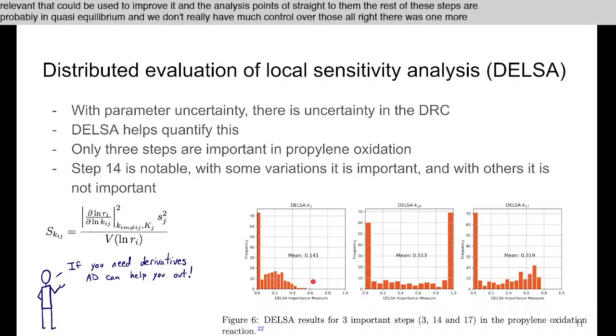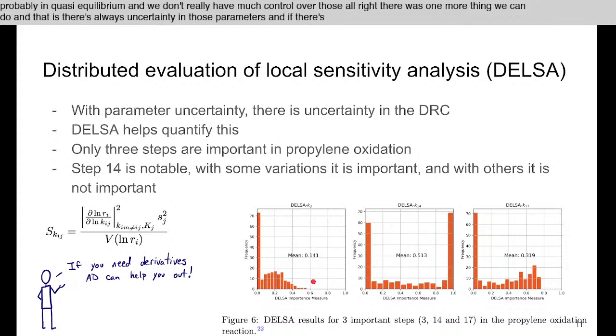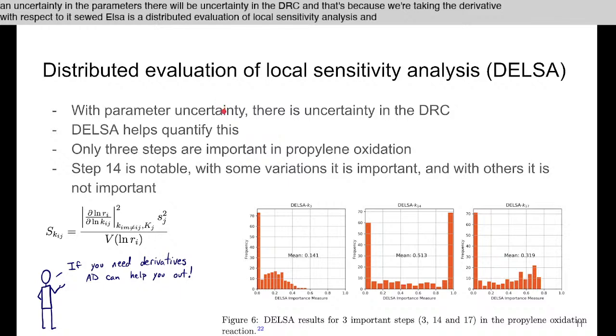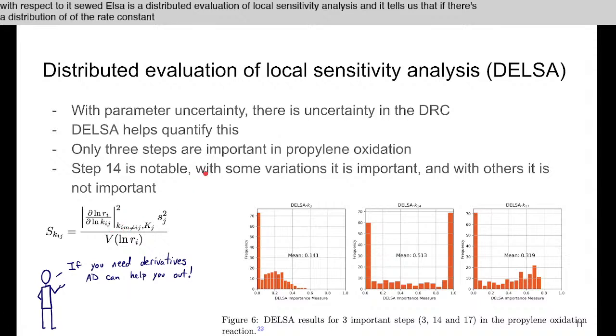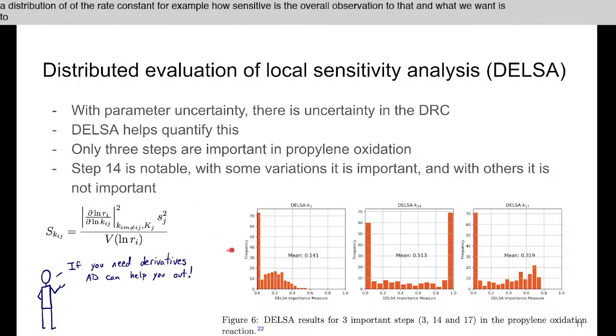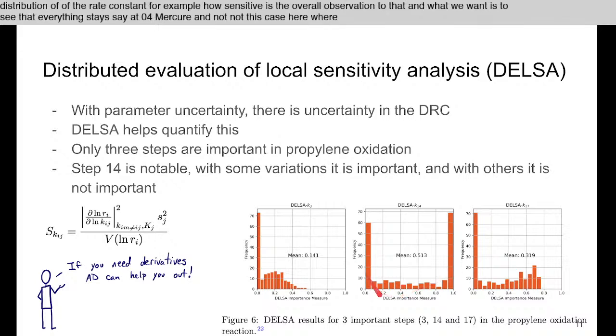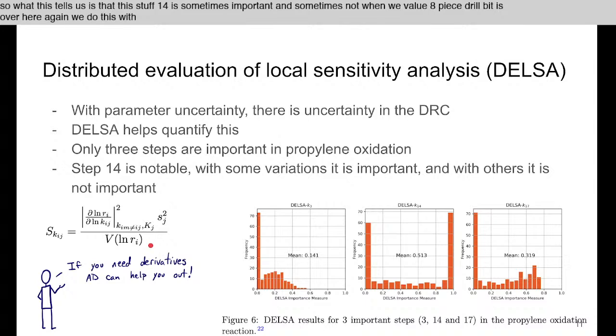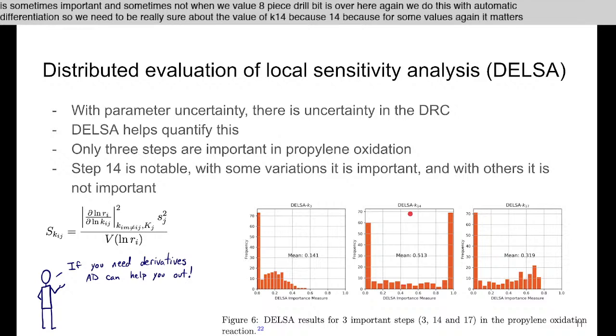There's one more thing we can do, and that is there's always uncertainty in those parameters, and if there's uncertainty in the parameters there will be uncertainty in the DRC because we're taking the derivative with respect to it. DELSA is a distributed evaluation of local sensitivity analysis, and it tells us if there's a distribution of the rate constants, for example, how sensitive is the overall observation to that. What we want is to see that everything stays at 0 over here, and not this case here where we have some are 0 and some are 1. What this tells us is that step 14 is sometimes important and sometimes not when we evaluate these derivatives. Again, we do this with automatic differentiation. We need to be really sure about the value of k14 because for some values it matters and for others it's much less important.